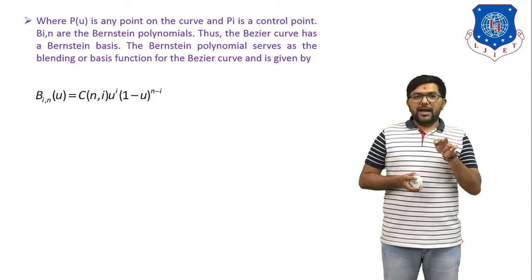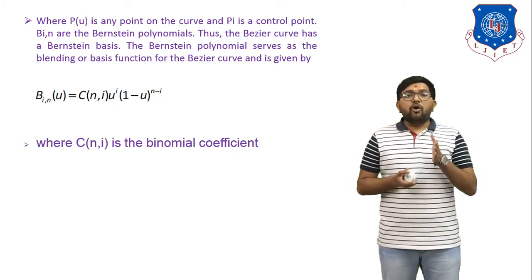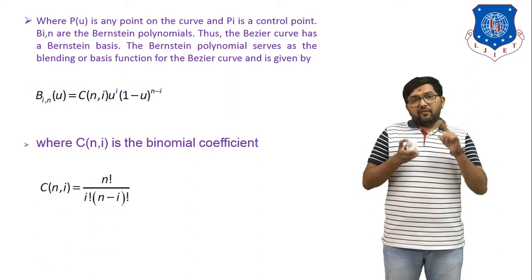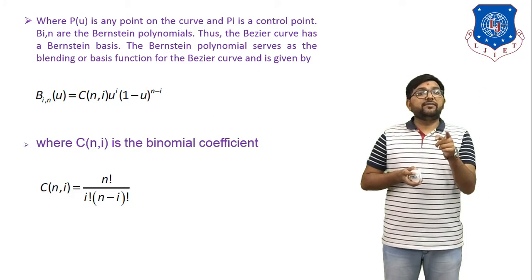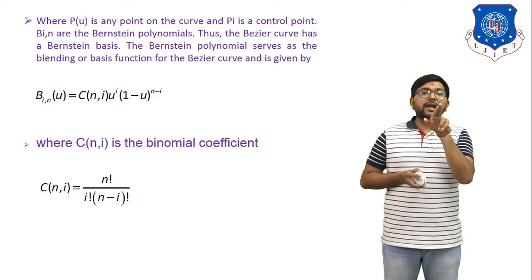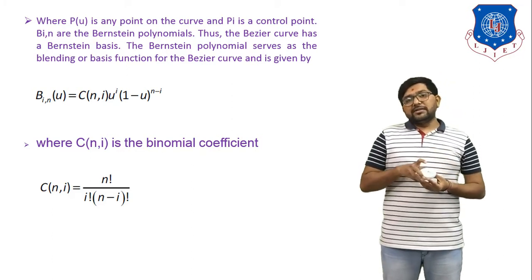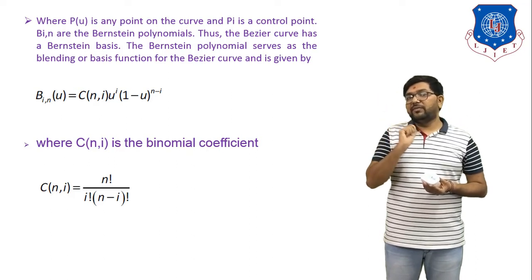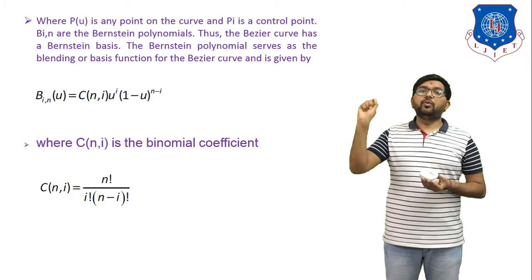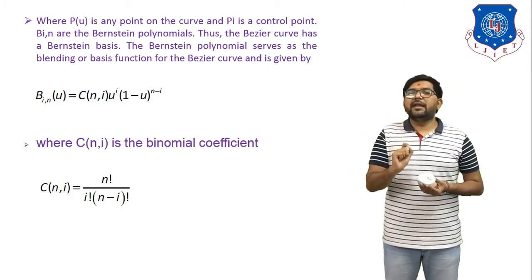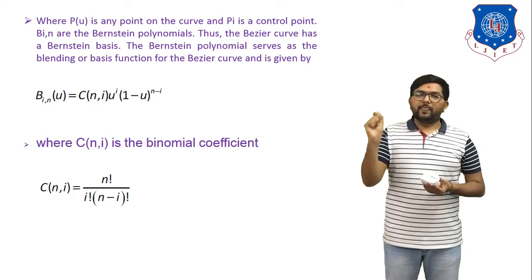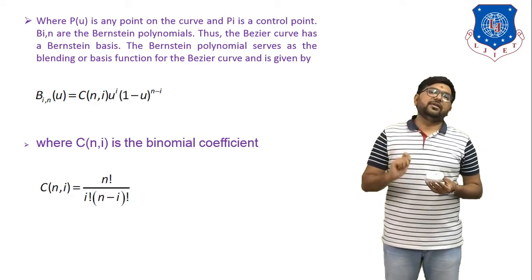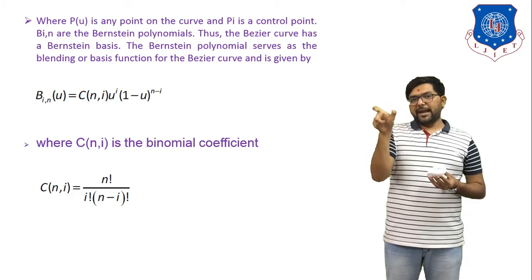The Bernstein polynomial is C(n,i) · uⁱ · (1−u)^(n−i), where C(n,i) is the binomial coefficient. The formula for the binomial coefficient is C(n,i) = n! / (i! · (n−i)!). You already learned this in Maths. For example, 5! = 5×4×3×2×1, and 3! = 3×2×1.